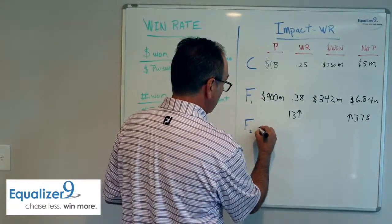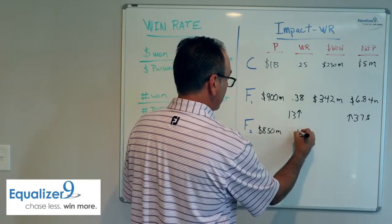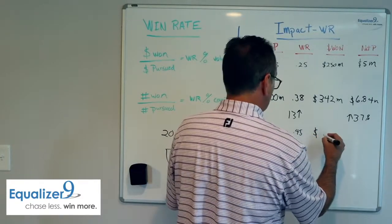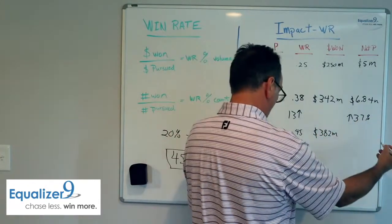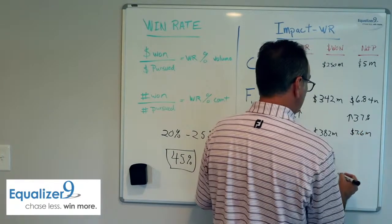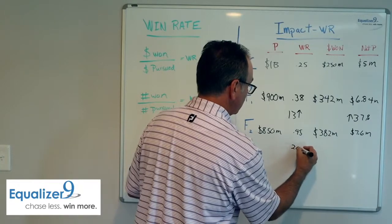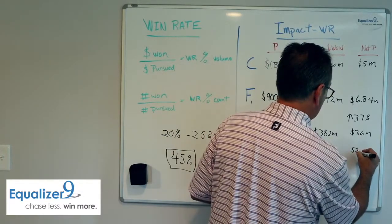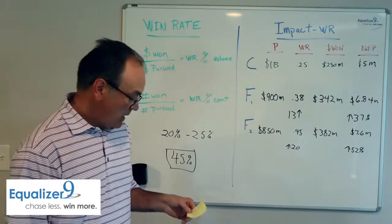Now, let's go to future state two. We continue to get better. We're only pursuing $850 million now, but our win rate has went up to 45%. And that means that we have won $382 million. Our net profitability, if we still work on 2%, that means we have $7.6 million in profitability. So, from the beginning, our win rate has went up 20%, 20 points. Our profitability has went up 52% from where we started.